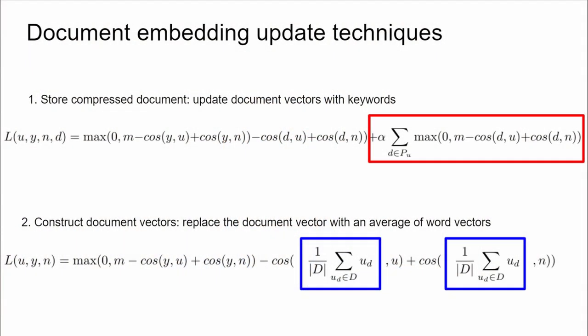The first technique compresses the document into a weighted bag of keywords representation, and this is included in the loss function, so the original document vectors continue to be updated. This has the advantage that terms that do not appear in the domain corpus, but are keywords to the original documents, are also updated. However, this method has computational and memory costs associated with it.